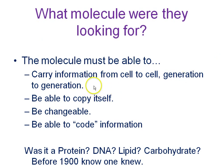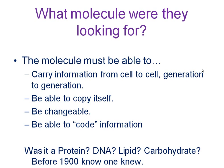The molecule had to be able to pass from one organism to another — from parents to children. It also had to be able to copy itself and make new copies for every cell produced by a multicellular organism. It had to be changeable; if the codes were not changeable, you could never improve on them or develop more complicated proteins to make new traits. And the molecule had to be able to code for and store genetic information. So the question was: was it a protein, DNA, a lipid, or a carbohydrate?